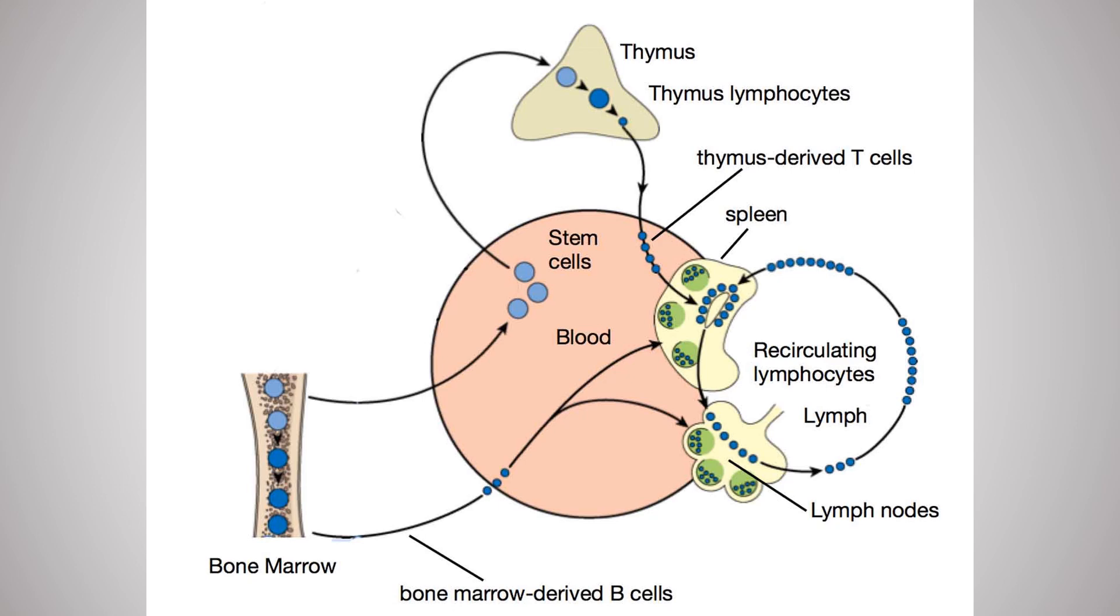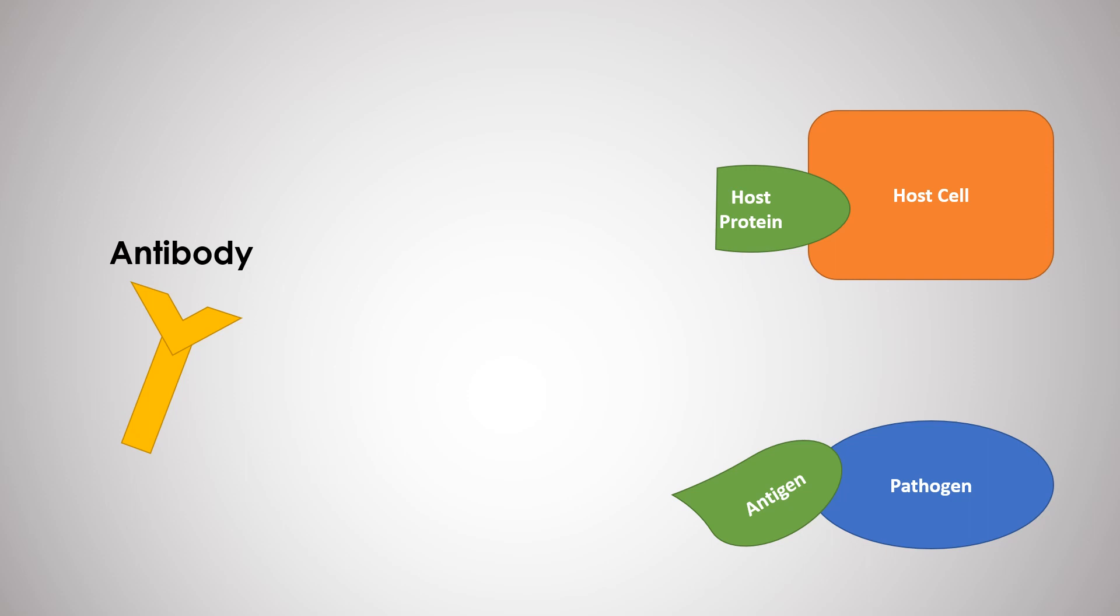While inactive, lymphocytes are circulated through lymph nodes, blood, and the spleen. Lymphocytes have antigen receptors that can identify and bind to specific antigens. B cells also produce free-floating receptors called antibodies. These receptors play a critical role in the specificity of the adaptive immune system.